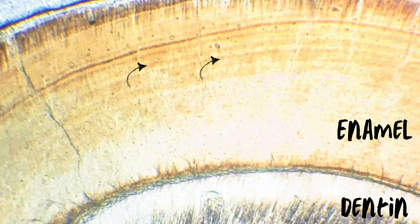In ground sections observed in a light microscope, they can be seen as brown bands on the enamel surface. They are more prominent in postnatal enamel than prenatal enamel and appear as oblique lines on longitudinal ground sections and as concentric rings on transverse ground sections.